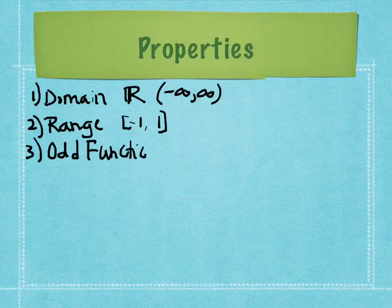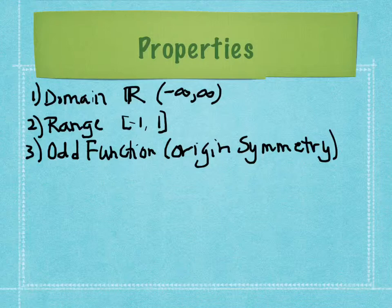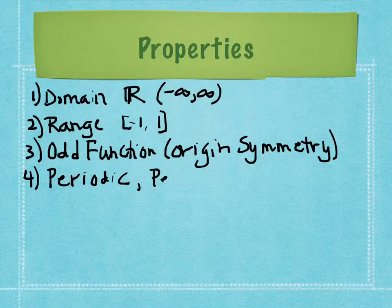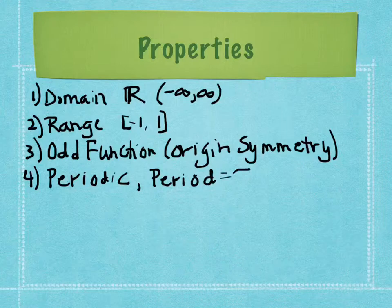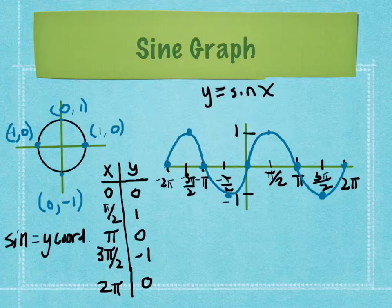An odd function has origin symmetry — if we rotate the graph 180 degrees around the origin, it lands right back on itself. This graph is also periodic with a period of 2π. It takes 2π before the same image repeats itself, which is why we see a full wave going all the way up, all the way back down, and back to neutral between 0 and 2π.